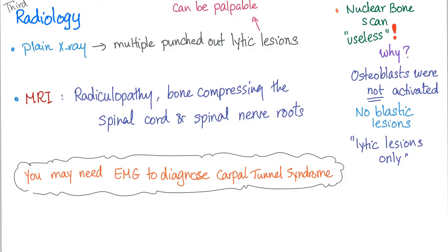On plain X-ray, we see multiple punched-out lytic lesions in the back and skull — these can be palpable on physical exam. Nuclear bone scan is useless. MRI is indicated for radiculopathy, as it is best for evaluating the brain, nerves, and spinal cord compression — radiculopathy and bone compression of spinal nerve roots will be evident on MRI.